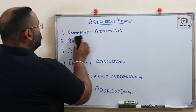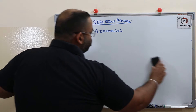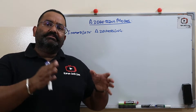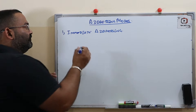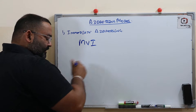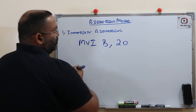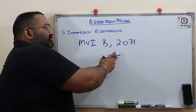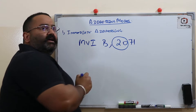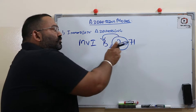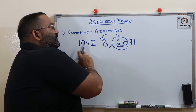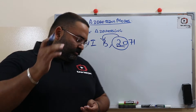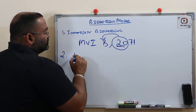The first type of addressing is called immediate addressing. In immediate addressing, your data or operand value is written directly in the instruction. For example, MVI B, 20H — whatever the data is in the instruction, move it to CPU register B. Because the data is in the instruction itself, we call it immediate addressing.